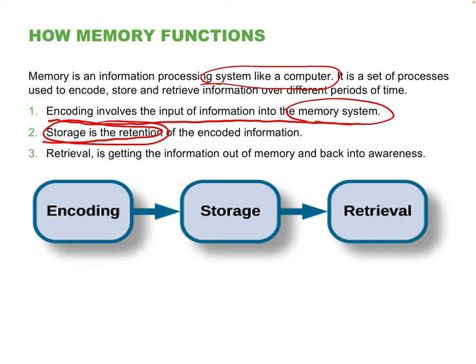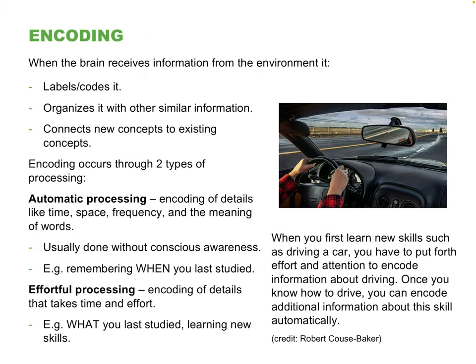The third process is retrieval. We've encoded information, we've stored it, and now at some point we need to retrieve it. For students, this is your mission in college — every time you take a class you have to encode as much information as you can, and during a test you have to retrieve it. The last thing we'll discuss in this lecture is how to improve your memory and your academic performance.